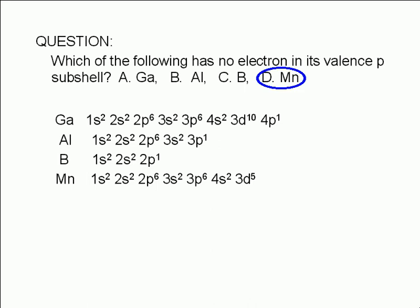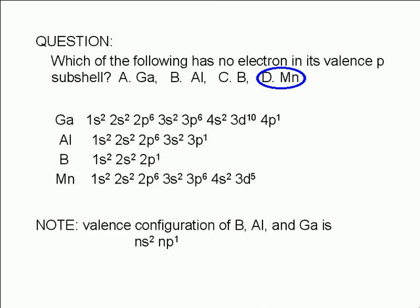You will notice that the valence configurations of boron, aluminum, and gallium all have 2 electrons in the valence s subshell and 1 electron in the valence p subshell. We say that the valence configurations of these atoms are the same: ns2, np1, where n is the principal quantum number for the valence shell.